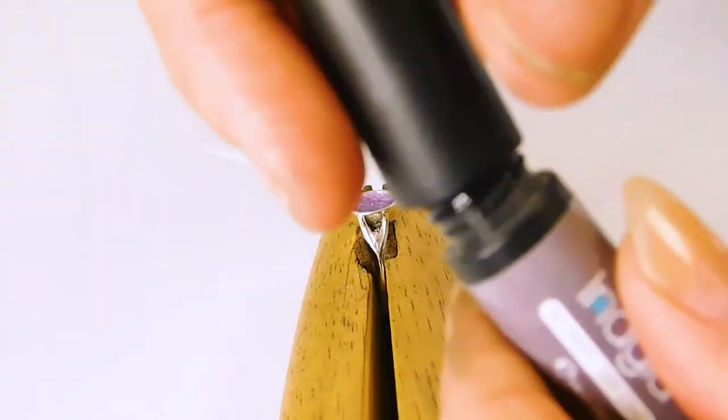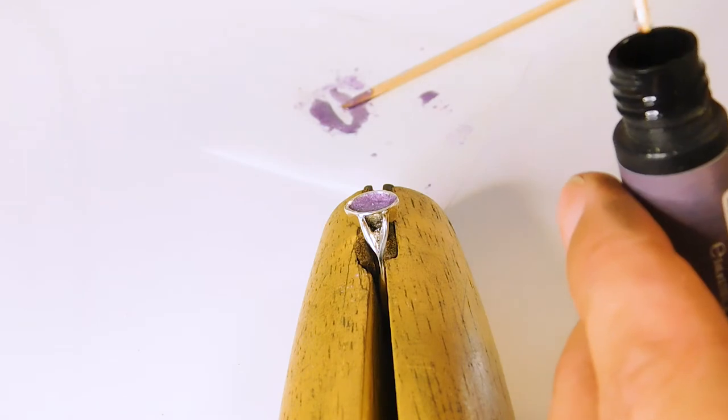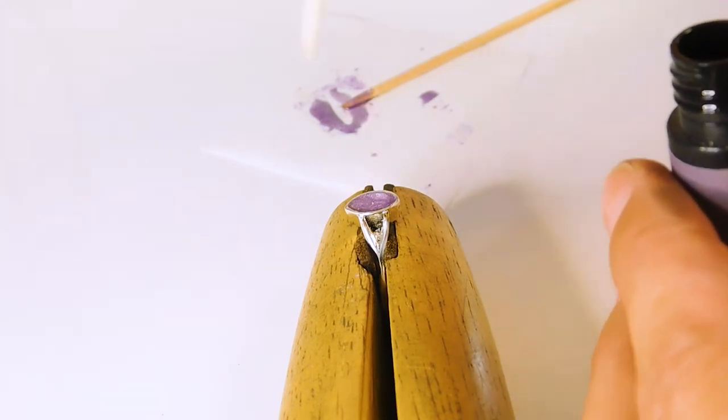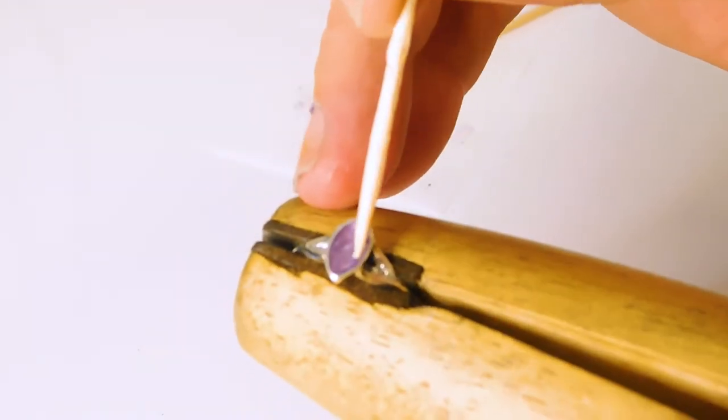Top coat. Whilst the bezel cup is under the UV lamp, you can do a top coat on the ring. Be careful here and take time to make sure that it doesn't bleed over the edge and has a slight dome.